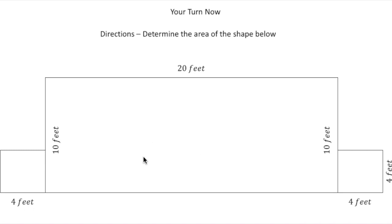So if you notice, the shape consists of a rectangle and then two squares. So to find the area of the big rectangle, I'm going to do area equals length times width. And I know the length is 20, and I know the width is 10. So 20 times 10 is 200.